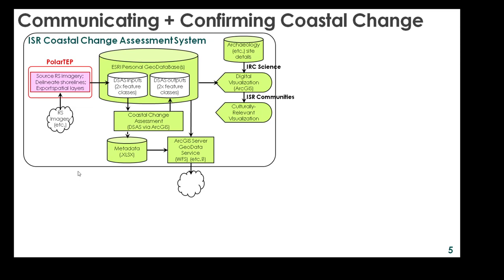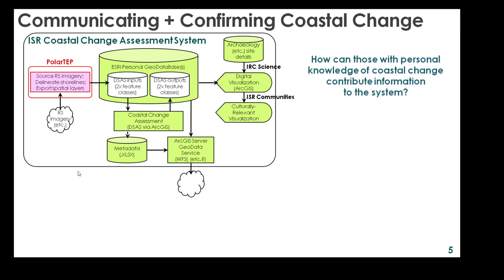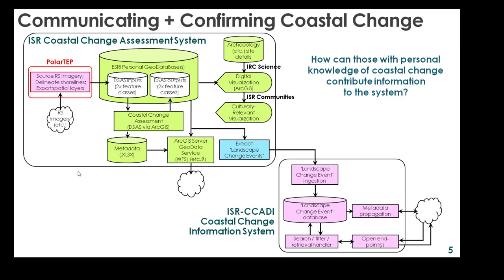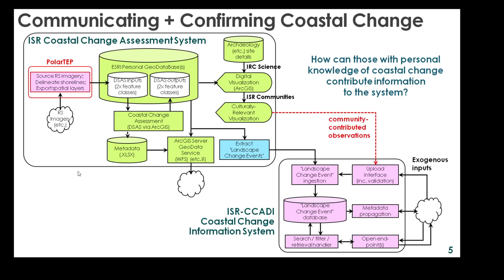The possibility arises that the model results may differ from events observed from the land itself. We therefore hope to extend the system so that it includes the means through which information of this nature may be contributed. For this, we envisage abstracting from the raw DSAS outputs key details of locations, directions and rates of coastal change, and feeding these into a separate repository built to represent a more generic concept of geomorphological change, potentially extending to other landscape contexts. This would enable details of these events to be provided from external sources, including from ISR community members with direct observational experience, therefore augmenting the overall understanding of locations and rates of landscape change in these dynamic environments.